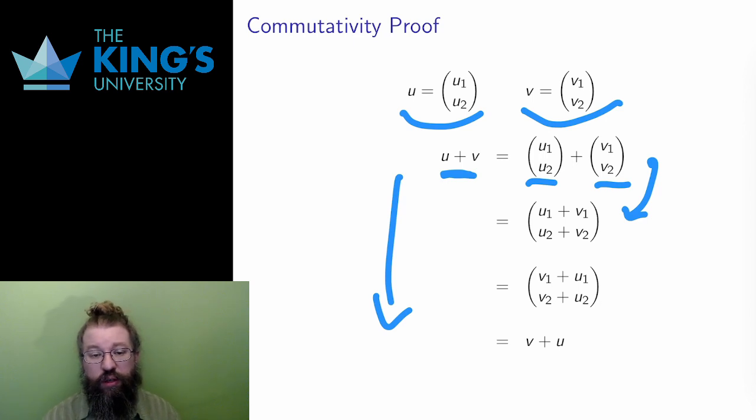Now, in each component, I have the addition of ordinary numbers. u1 and v1 are numbers, so the order of the addition does not matter. I can switch that to v1 plus u1. Likewise for the second components. And finally, I recognize that after the switch, this is just the sum of the vectors in the other order, and I've completed the proof.